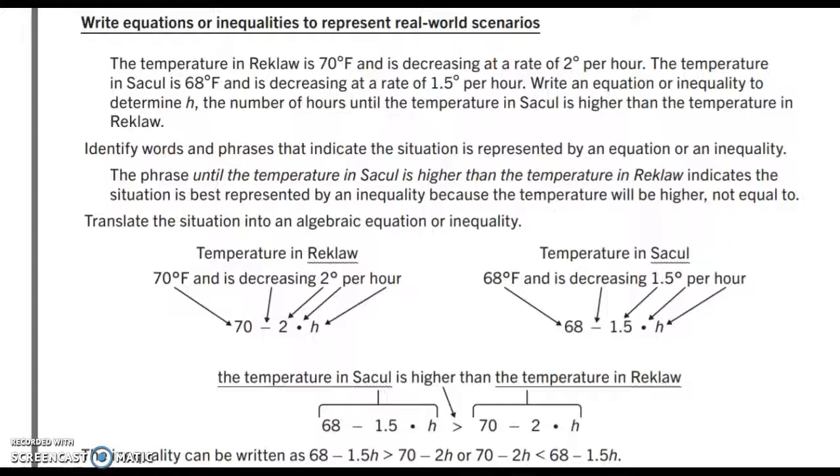We're going to write an inequality or equation that would correlate to this problem where we determine that H is the number of hours until the temperature in Sacul is going to be higher than the temperature in Reclaw. So, we need to identify words and phrases that will indicate the situation is going to be represented by an equation or an inequality.